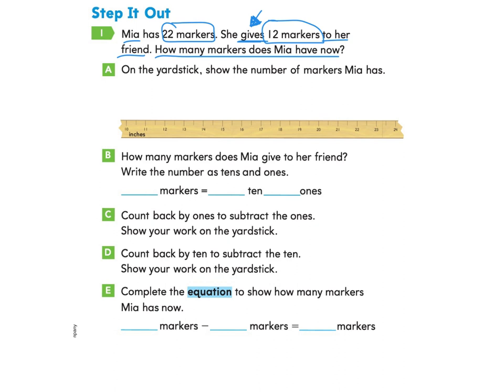Okay, so Mia has 22 markers. So I'm going to make a dot right here by the 22. Now let's look at part B. How many markers does Mia give to her friend? Write the number as tens and ones. So we see that she gave 12 markers to her friend. So if she gave 12 markers, that would be two ones and one ten.